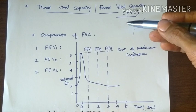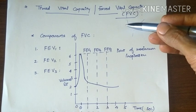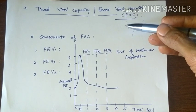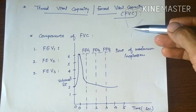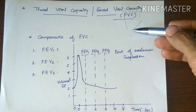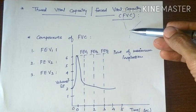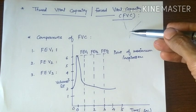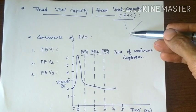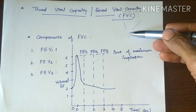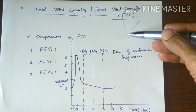It is the volume of air that can be expired rapidly with maximum force following maximum inspiration. So here vital capacity is expired rapidly. Forced vital capacity is a dynamic lung capacity. Here the volume of air which is expired is timed by recording this vital capacity on the spirograph moving at a known speed.